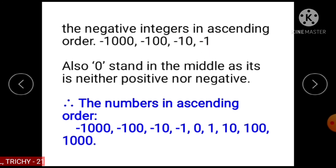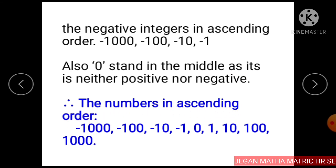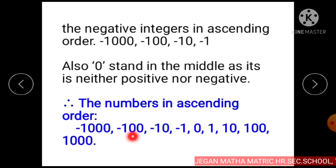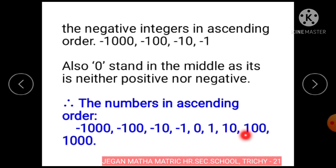Here, 0 stands in the middle as it is neither positive nor negative. So the given numbers in ascending order are minus 1000, minus 100, minus 10, minus 1, 0, 1, 10, 100, and 1000.